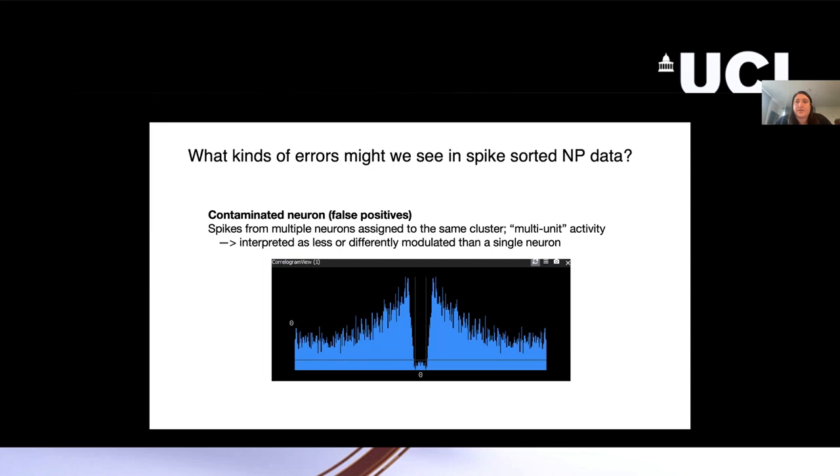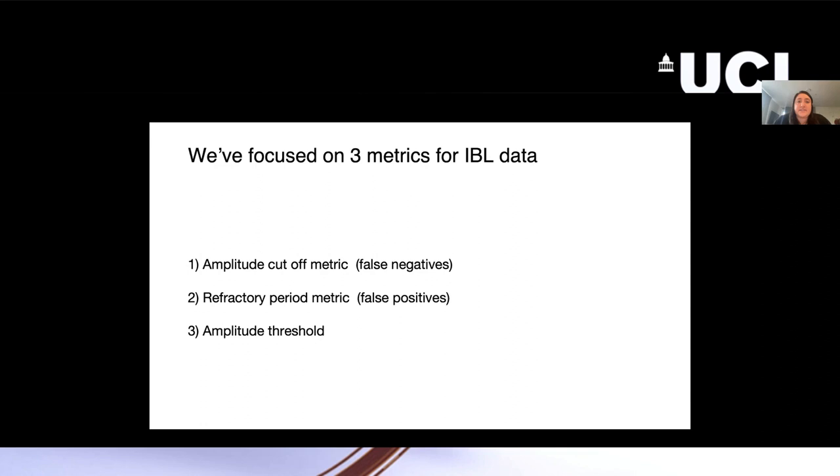With that, we basically decided to focus on three different quality metrics for the IBL data. I'm going to focus today on the first two. The third one is just a median amplitude threshold to get rid of neurons that have very low amplitudes. Just to reiterate, Julie mentioned that was important.